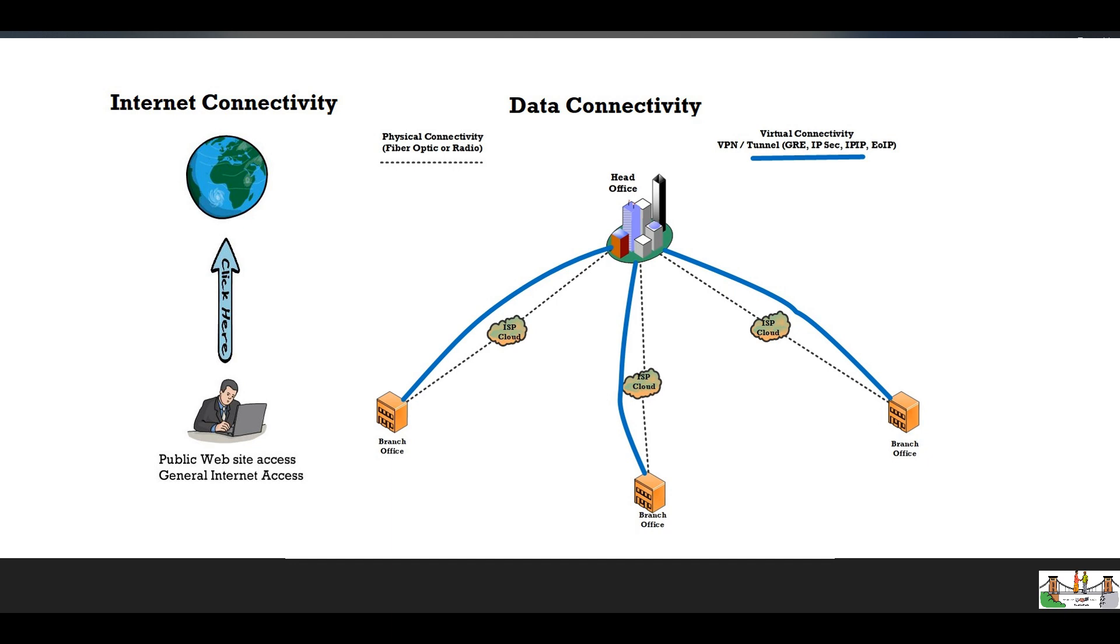Basically, Internet service providers connect head office and branch offices by their private cloud. Organizations make a tunnel for VPN on this connectivity and make it accessible and secure for accessing their private resources.